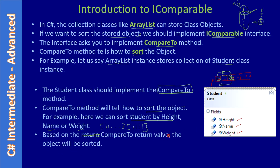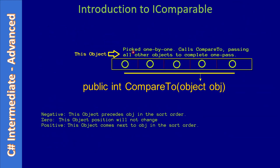Based on the CompareTo return value, the objects will be sorted. Let's look at the prototype or signature of the CompareTo method: it takes an Object parameter and returns an integer. This integer tells the collection class — which can be ArrayList, LinkedList, or any other C# collection — how to sort the objects. If the return value is zero, the CompareTo method is telling the calling collection object, in our example ArrayList, that the object's position will not change — both objects are equal, no exchange needed.